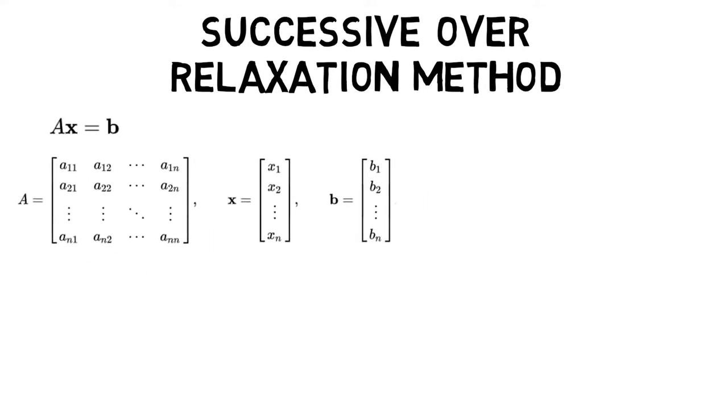The last method is successive over-relaxation or SOR method. Given a square system of N linear equations with unknown x such that Ax equals to b where A, x and b are denoted by the following matrices.